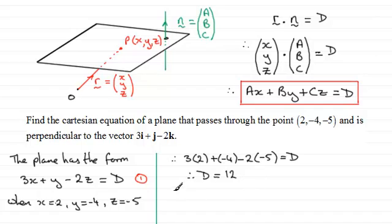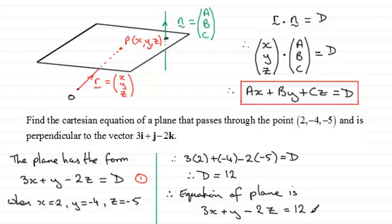So now that we've got d equals 12, we can just say that therefore the equation of the plane is 3x plus y minus 2z equals the constant d, which we've seen is 12.